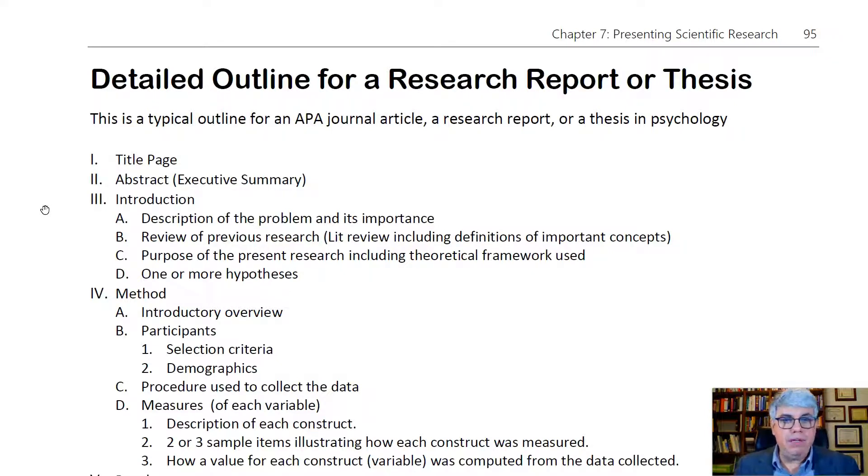Then you move into the review of previous research that's been done on the topics relevant to your research problem. So this is the lit review, the literature review. You need to include the definition of all the variables that you're going to be studying. And besides the definitions, it's good to include information about these variables. The antecedents and the consequences are how we usually describe them.